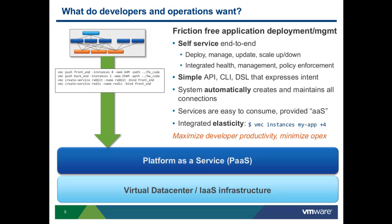What do developers and operations want? They basically want VMC instances — one command line or one API call that abstracts all that complexity into a few simple API calls. They want friction-free application deployment, self-service end-to-end: deploy, manage, update, scale — all done with a few API calls. Your code is not affected by where it's deployed, how it's scaled, or which component it needs. Everything is provided as a service. The PaaS engine automatically creates and maintains all the connections between middleware components.